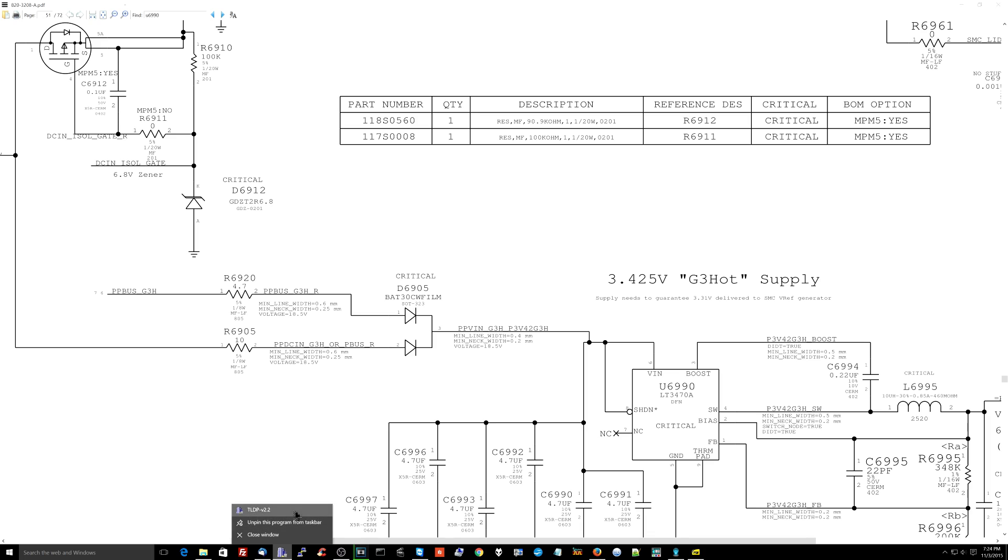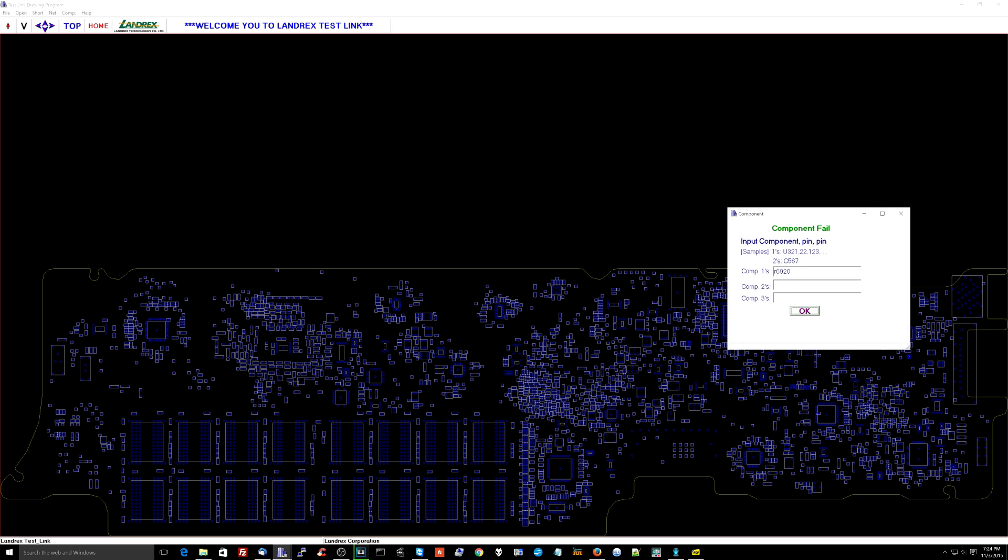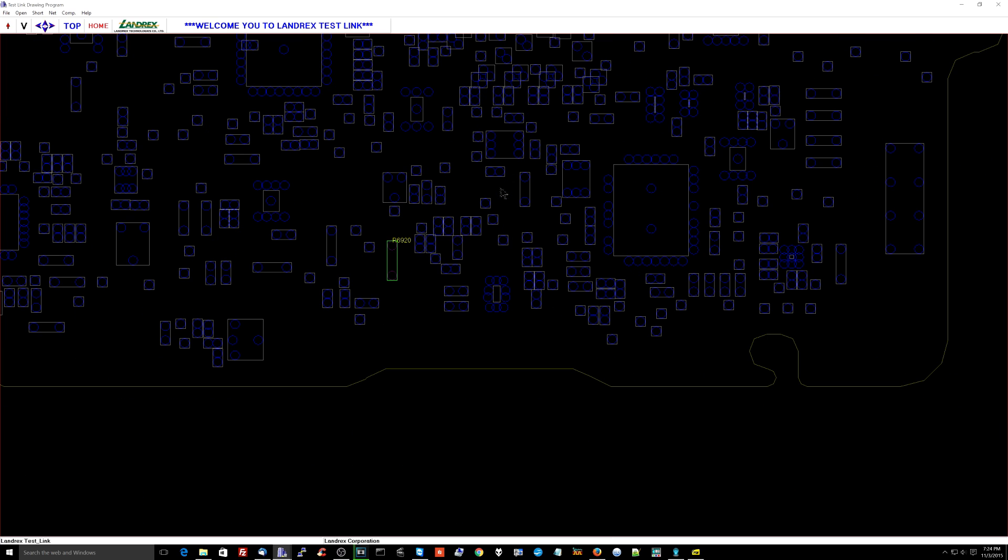Let's see where R6920 is. This is an 820-3208 motherboard. Let's look for R6920. That's going to be over here. Now let's go over to the microscope so I can see what that looks like.